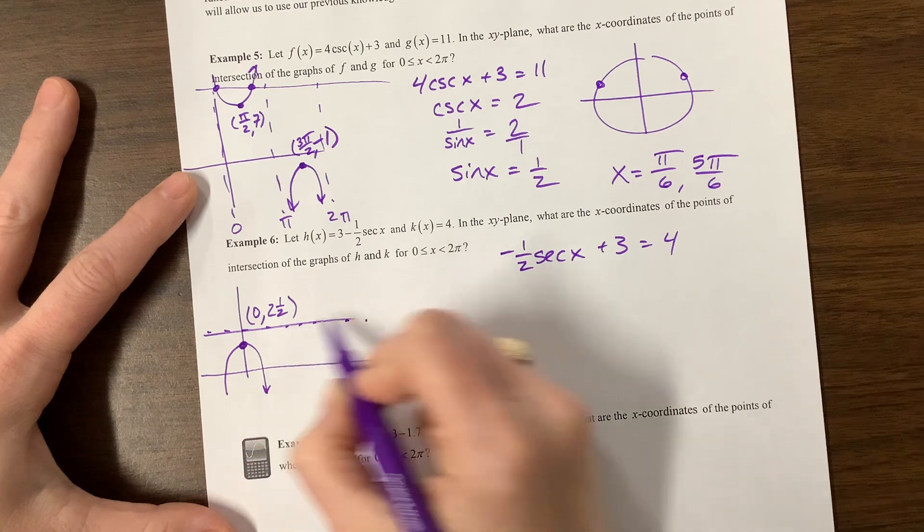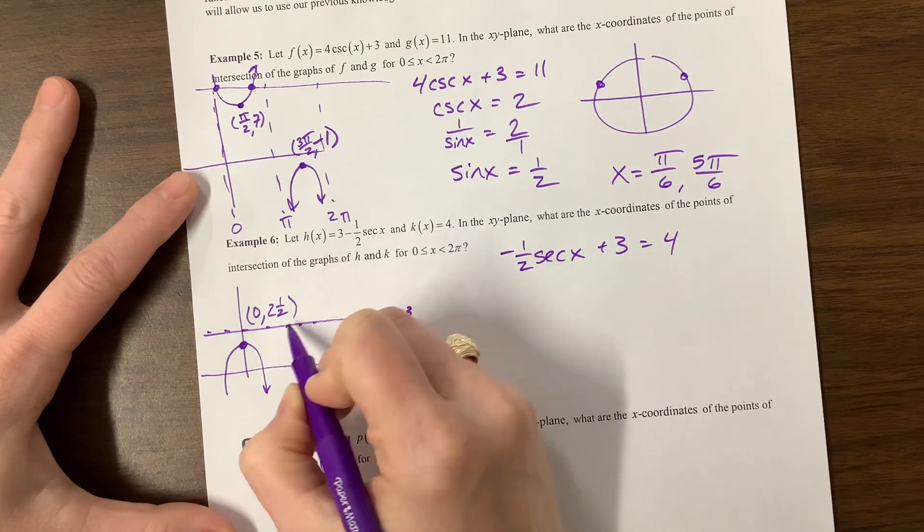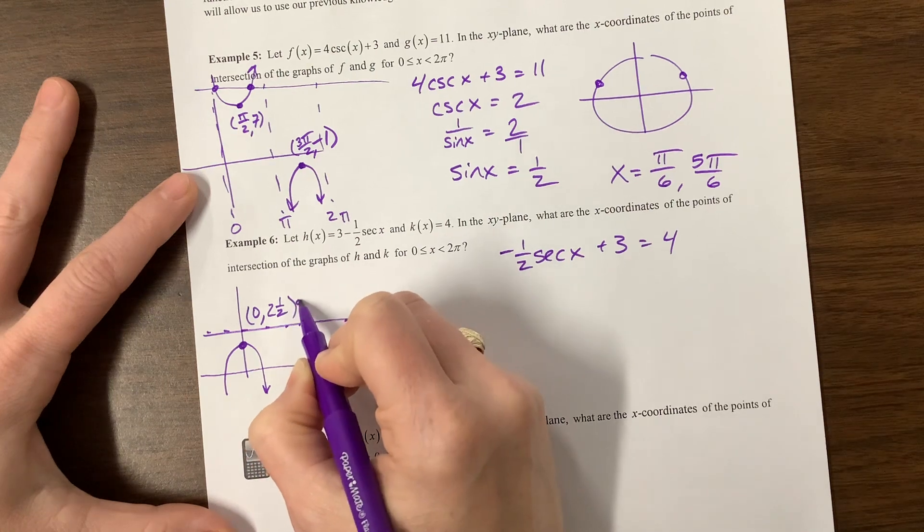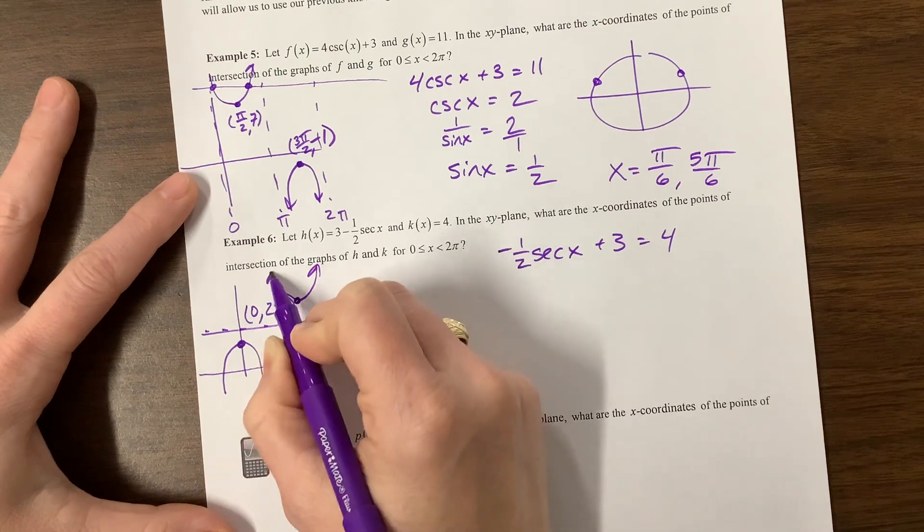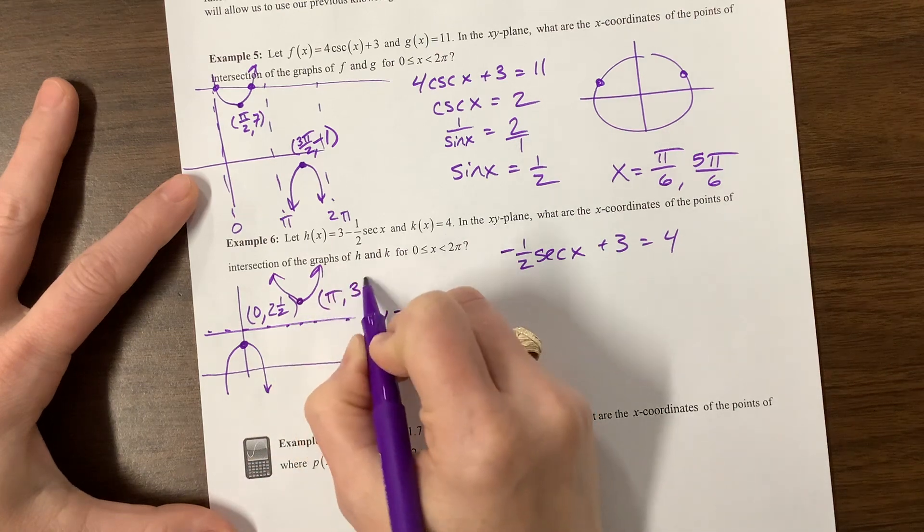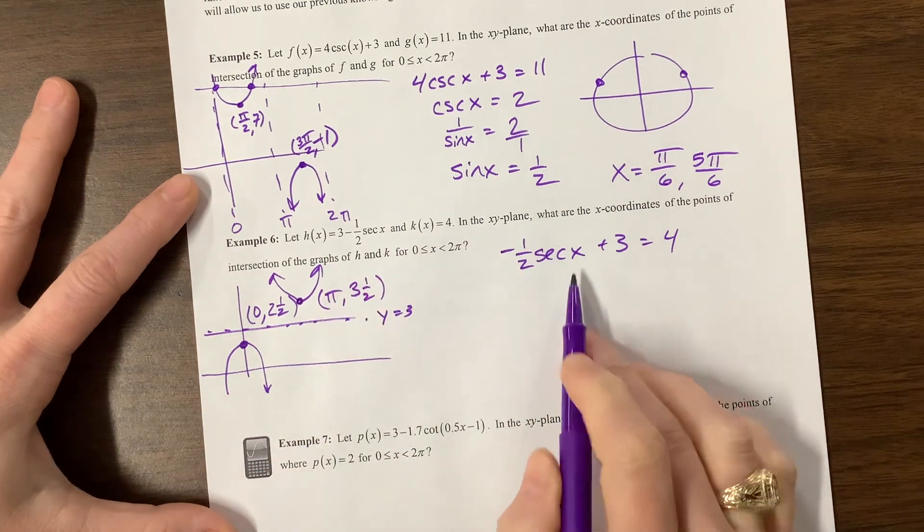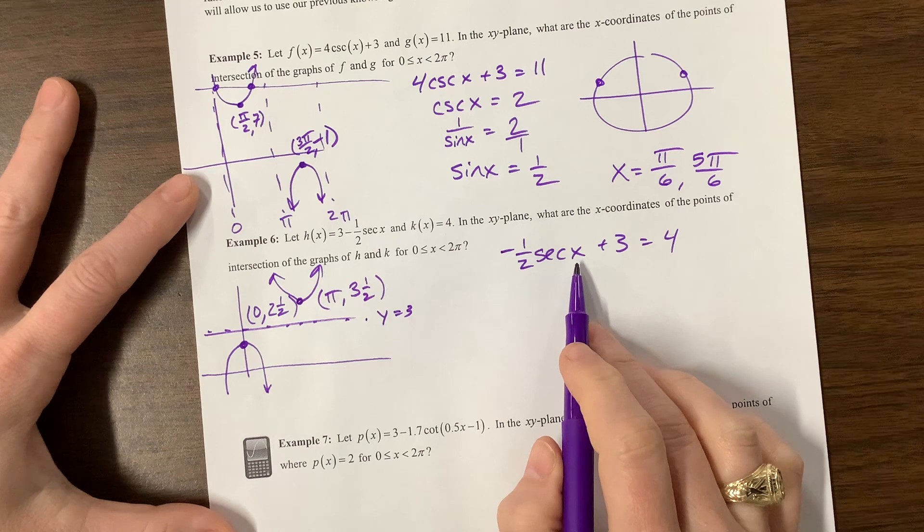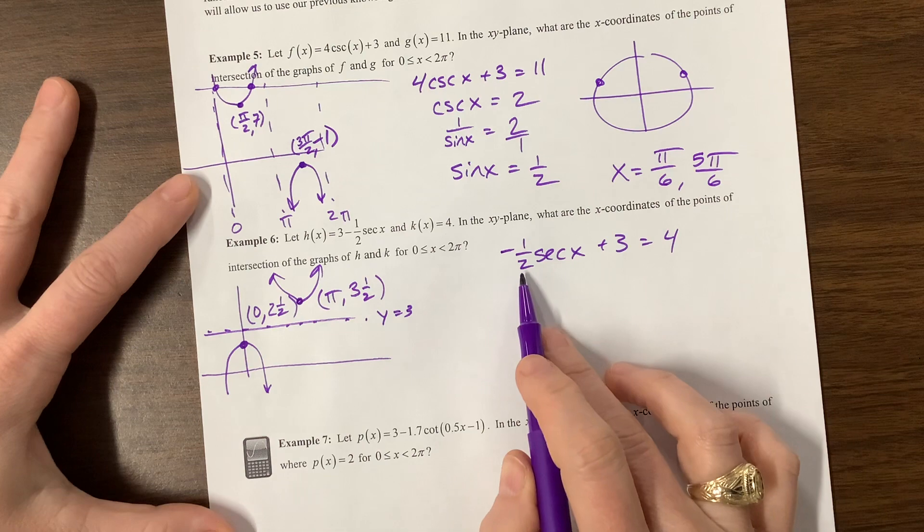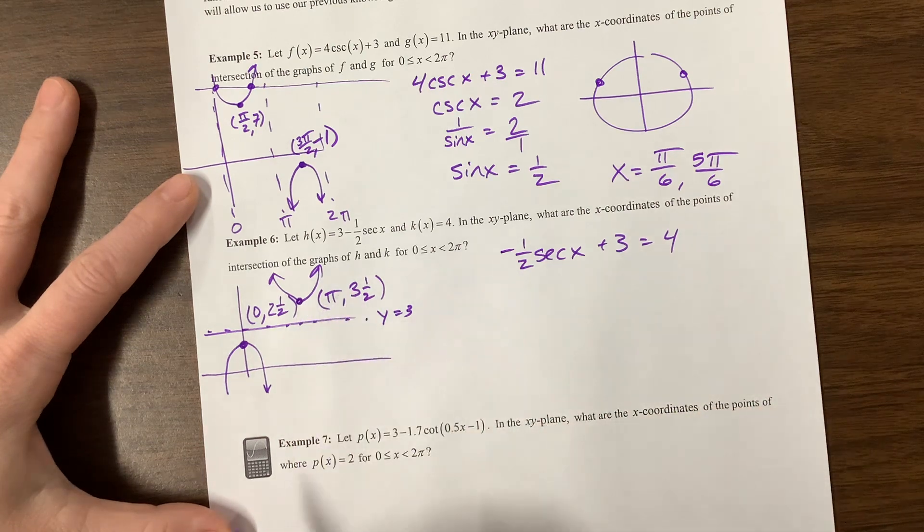So then the other one is going to be, it would have been at positive 1 half, but up 3 is going to get me to 3 and a half. So if this is 0, 2 and a half, then we need, I wrote in the wrong spot, we'll call this line y is equal to 3, that's the new midline, and then we have some point over here. This would be the point π, 3 and a half. Is that right? Let's see, secant of π, secant of π is going to be negative 1 times negative 1 half is now positive 1 half plus 3, and yes, there we go.